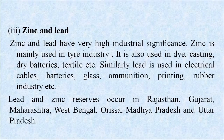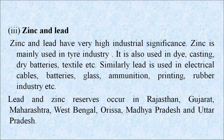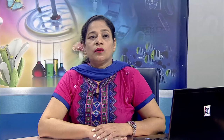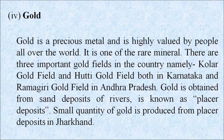Zinc and lead have very high industrial significance. Zinc is mainly used in the tire industry and also in die casting, dry batteries and textiles. Lead is used in electrical cables, batteries, glass, ammunition, printing, rubber, etc. Lead and zinc reserves occur in Rajasthan, Gujarat, Maharashtra, West Bengal, Orissa, Madhya Pradesh and Uttar Pradesh. Gold is a precious metal and is highly valued by people all over the world. There are three important gold fields: Kolar gold field and Hutti gold field, both in Karnataka, and Ramgiri gold field in Andhra Pradesh. Gold obtained from sand deposits of rivers is known as placer deposit; a small quantity is produced from placer deposits in Jharkhand.